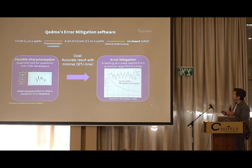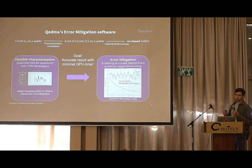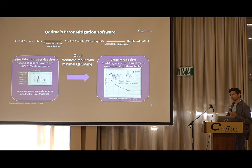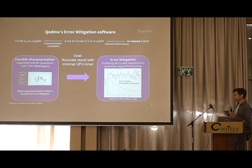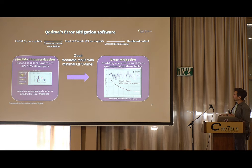You do classical post-processing and get an unbiased output. I'm highlighting 'unbiased' because it's important — once we get to large volumes, we need a guarantee. We've heard a lot about heuristic methods which sometimes work amazingly well and sometimes not, and as we go to larger volumes, we need some guarantee for the method.